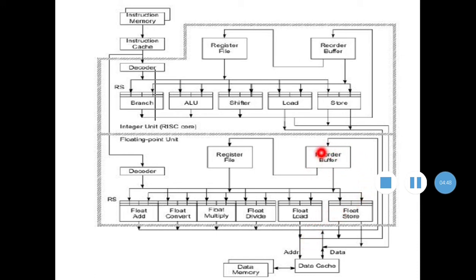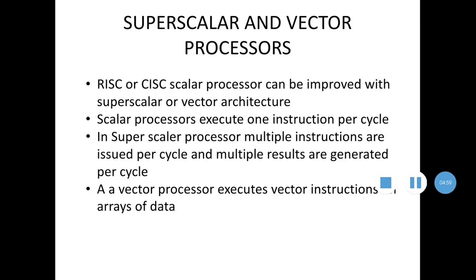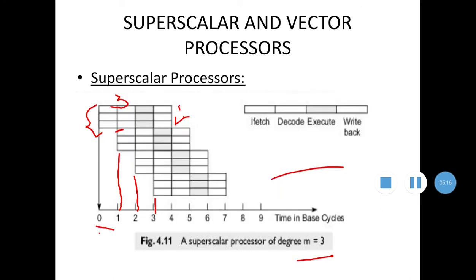This topic is usually worth seven to ten marks in exams. To summarize: a superscalar processor executes multiple instructions per cycle and generates multiple results, whereas a scalar processor executes one instruction at a time. You should include the diagram showing three instructions issued per clock cycle, where each instruction has four phases: fetch, decode, execute, and write-back.